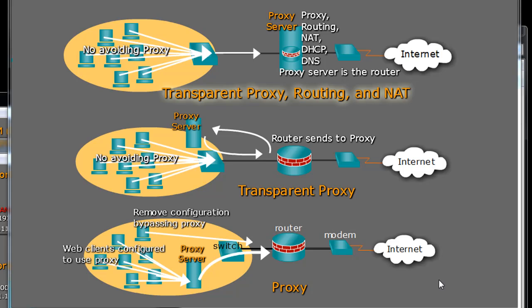In some previous videos, we created a proxy server — a Linux proxy server — and we set it up, putting Squid and SquidGuard on a Linux machine to create our proxy. When we did that, we went to our clients and configured proxy settings in the network settings dialog box on the web browser, like in Internet Explorer or Firefox. So when web requests are made from the hosts, they go to the proxy server, and then the proxy server makes the web request on behalf of the hosts.